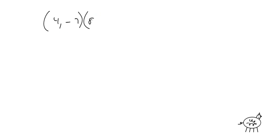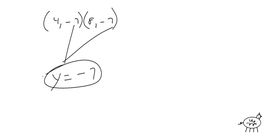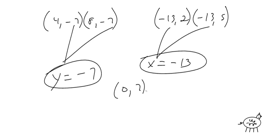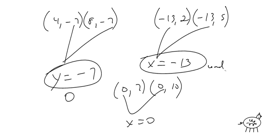Let's do some of these fast band problems. Given (4, -7) and (8, -7): y is negative seven for both — so y equals negative seven. Given (-13, 2) and (-13, 5): x's are the same — x equals negative thirteen. Given (0, 7) and (0, 10): x's are the same — x equals zero. These are really fast. If you're not sure, plug into the slope formula: y equals seven has slope zero, x equals negative thirteen has undefined slope, x equals zero has undefined slope.